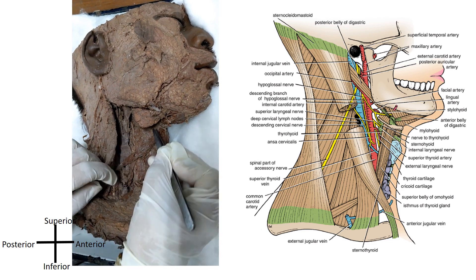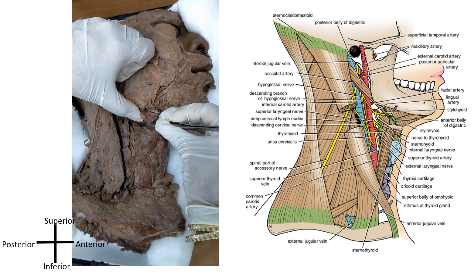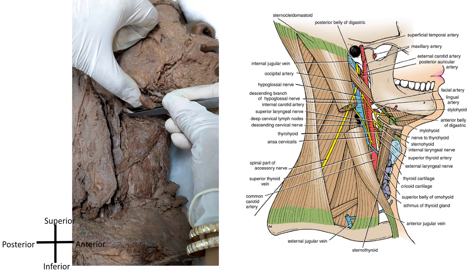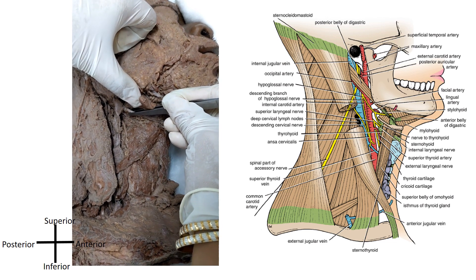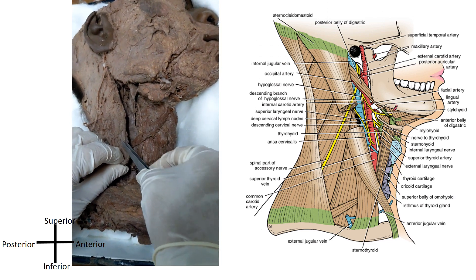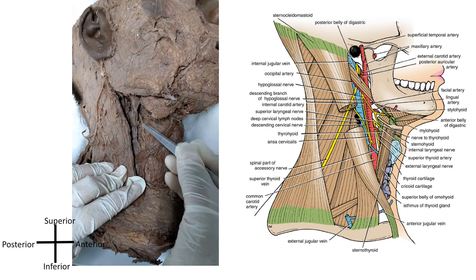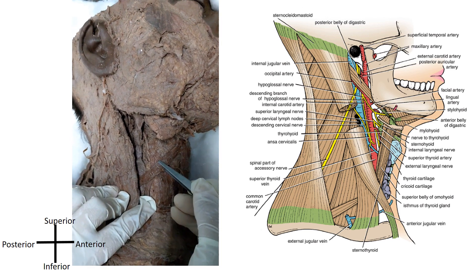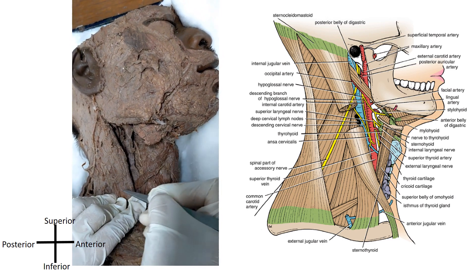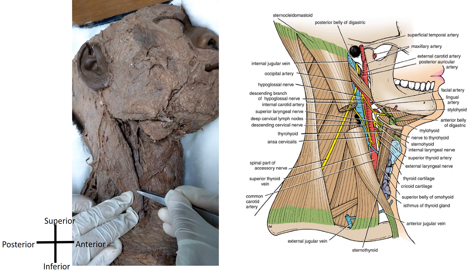The carotid triangle: its boundaries are — in front and above, it is formed by the posterior belly of the digastric muscle. Behind, it is formed by the anterior border of the sternocleidomastoid muscle. In front and below, it is bounded by the superior belly of the omohyoid muscle. So the boundaries are: the posterior belly of the digastric, the superior belly of the omohyoid, and the anterior border of the sternocleidomastoid muscle.